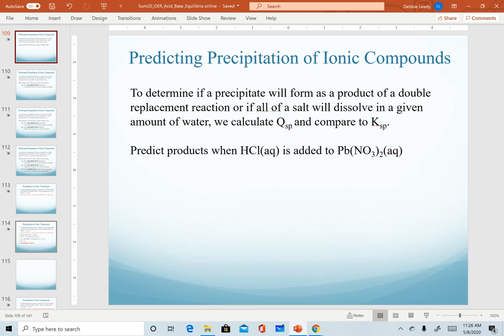In this variation of insoluble salts, we talk about how we determine whether or not we will get precipitation when we carry out a double replacement reaction.